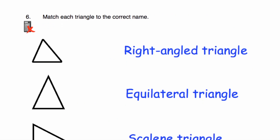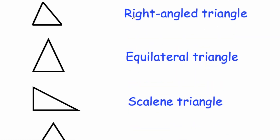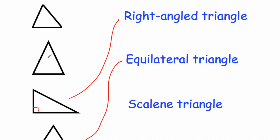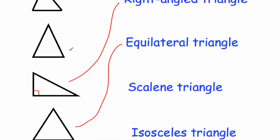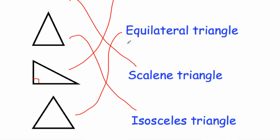Question number six — we've been asked to match each triangle to the correct name. The right-angle triangle is the triangle with the right angle. The equilateral triangle is the one at the bottom — measuring the sides confirms this. The second triangle down has two sides the same length, so that matches with isosceles. And the triangle at the top — measuring the three sides shows they're not all the same length — so that is a scalene triangle. So: top matches scalene, second matches isosceles, third matches right-angle, and last matches equilateral.